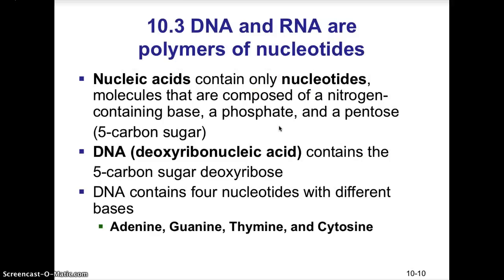DNA and RNA are polymers of nucleotides — they are polynucleotides where nucleotides are the monomer subunits. These nucleotides are composed of a nitrogen-containing base, a phosphate group, and a pentose 5-carbon sugar. For DNA, that 5-carbon sugar is deoxyribose; for RNA, that 5-carbon sugar is ribose.